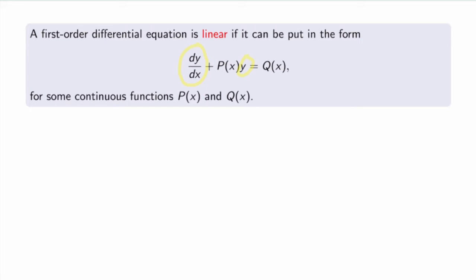It may happen that the equation you're given does not look like this at first, but if you can transform it into this form by either dividing or multiplying by some functions of x, then it is linear. For example, the equation dy/dx plus e^x times y equals 1/x is linear because it is exactly of this form. The dependence on x is not important, but the dependence on y is — the first term is dy/dx and the second term is linear in y.